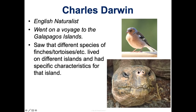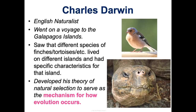Darwin went to the Galapagos and started studying. He's famous for studying the finches — a type of bird — and the tortoises, analyzing how they looked and the traits they had for their specific islands compared to the mainland. Through his observations, he came up with his theory for natural selection as the mechanism for how evolution occurs. Darwin did not invent evolution — he just explained how it happens.